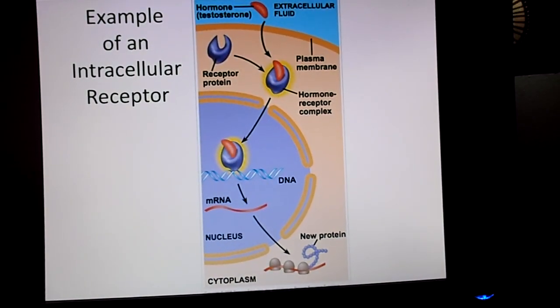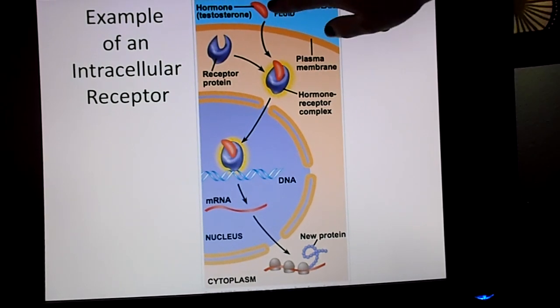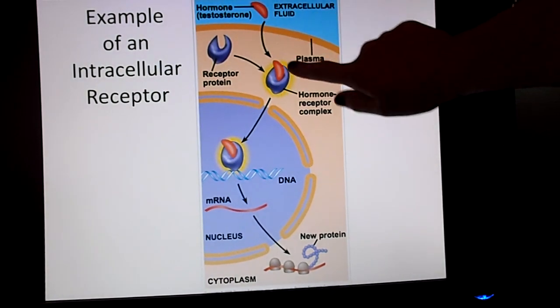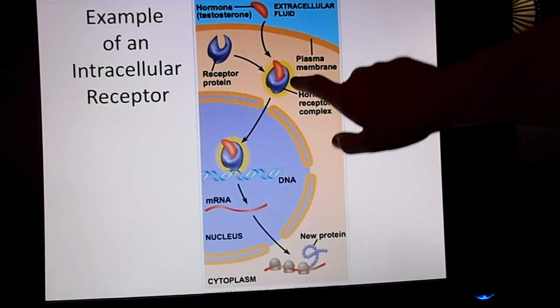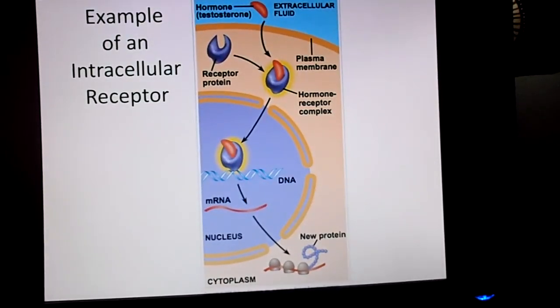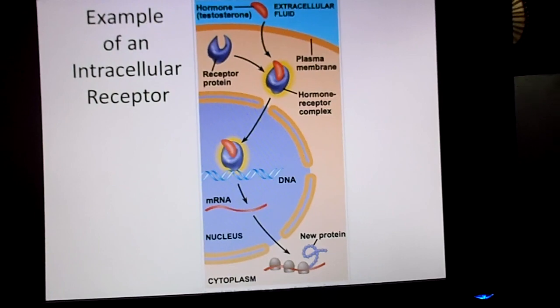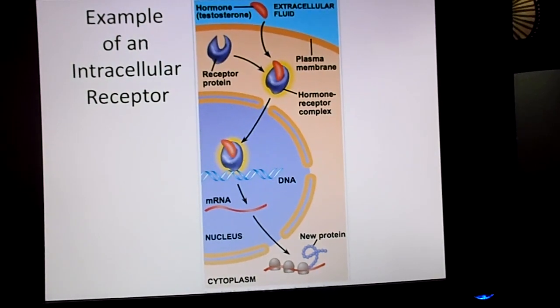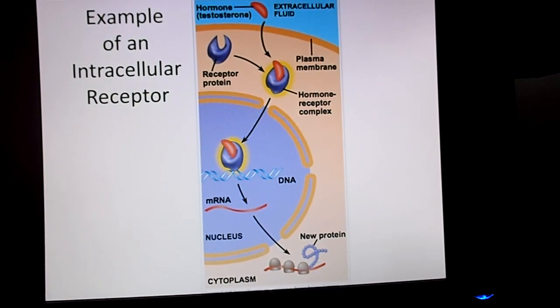So the hormone testosterone is shown as a pink kidney bean looking thing. It can pass right through the cell membrane, attach to the receptor protein, enter into the nucleus, and have a direct influence on how or which genes are transcribed during transcription.